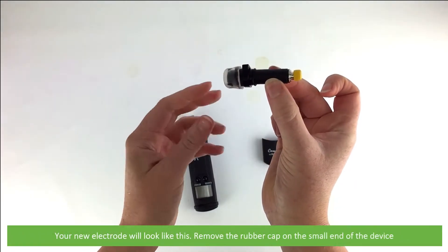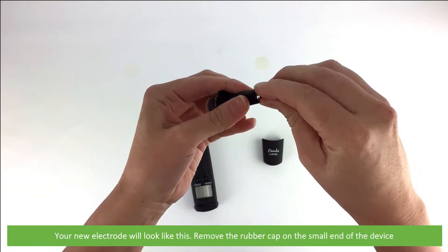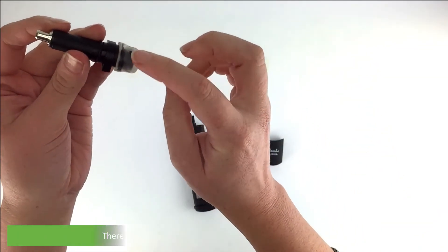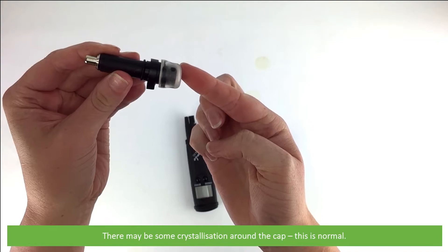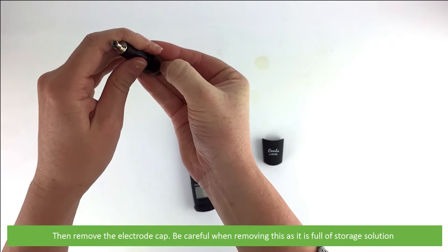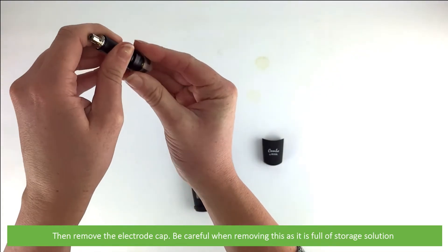Your new electrode will look like this. Remove the rubber cap on the small end of the device. There may be some crystallization around the cap - this is normal. Then remove the electrode cap, and be careful when removing this as it is full of storage solution.